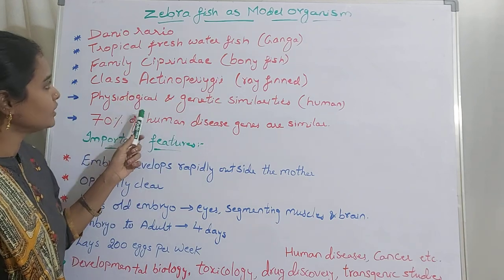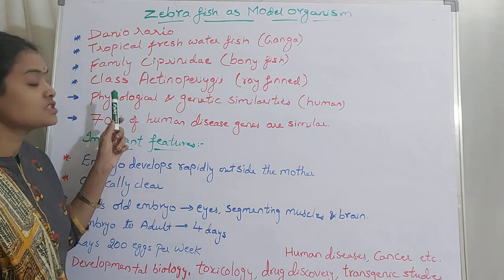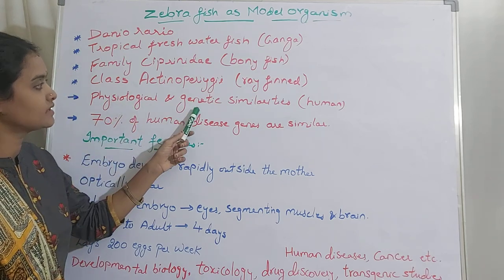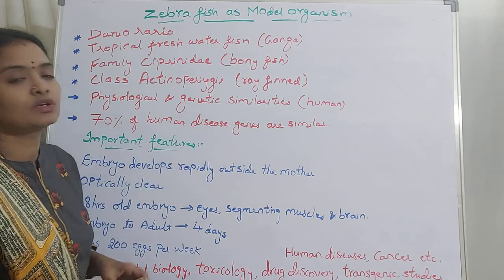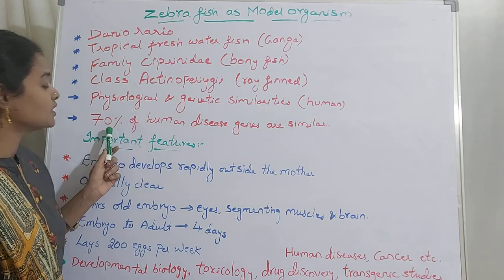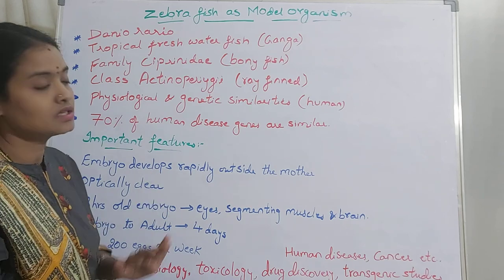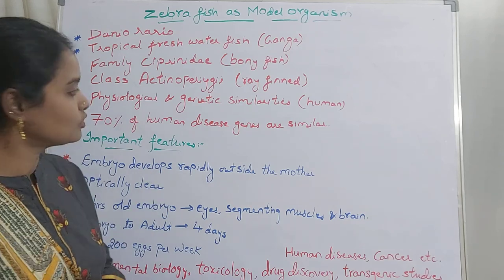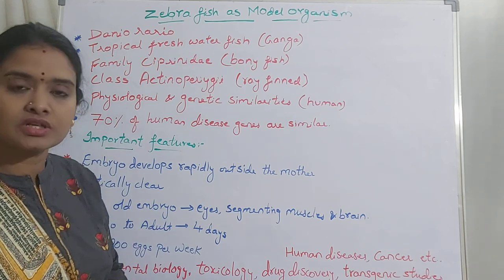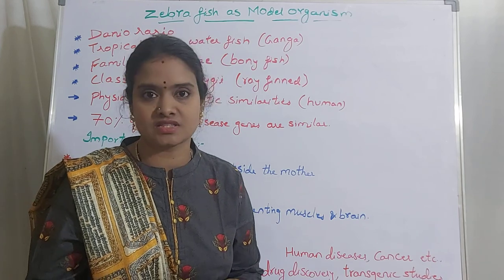The key reason for using zebrafish as a model organism is because of its similarities to humans. They have physiological and genetic similarities to humans — nearly 70% of human disease genes are similar to those in zebrafish. Also, zebrafish have the ability to regenerate the heart, kidney, liver, pancreas, and fins.